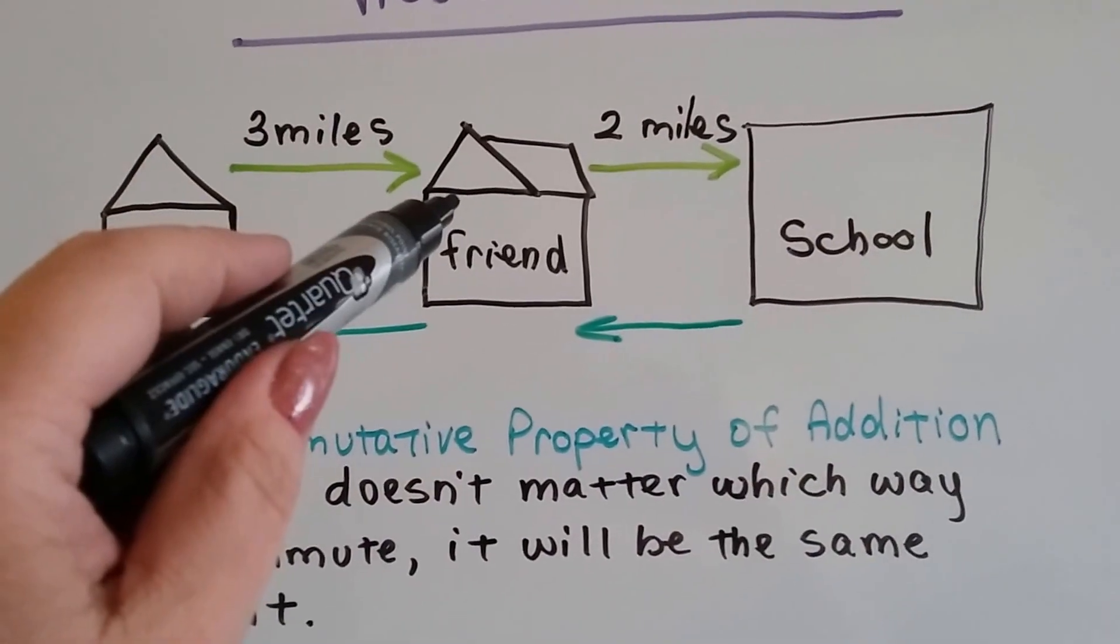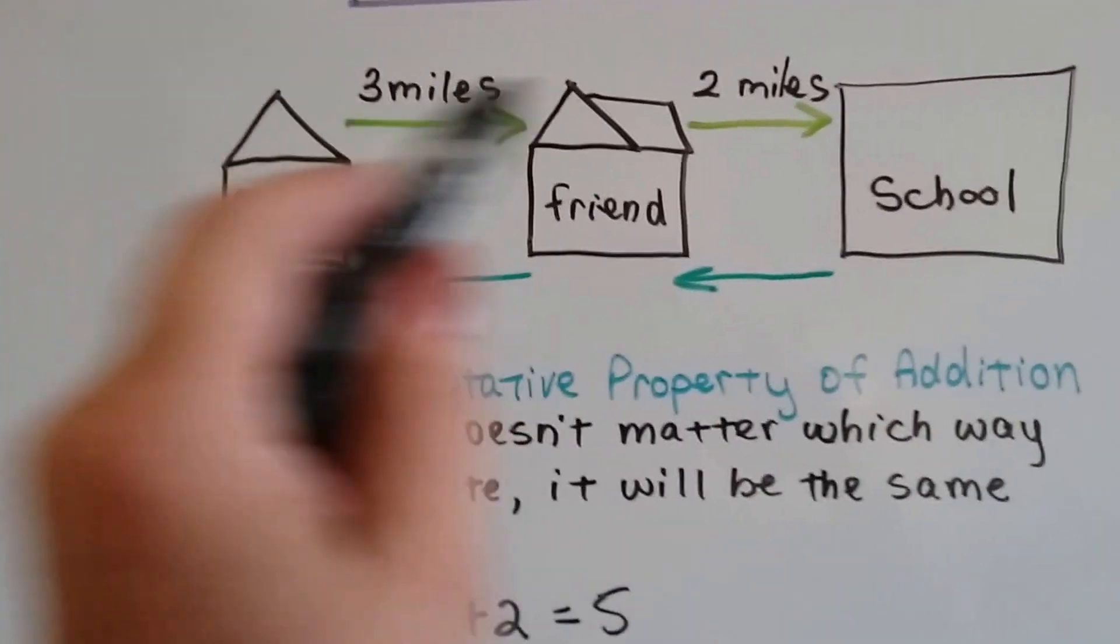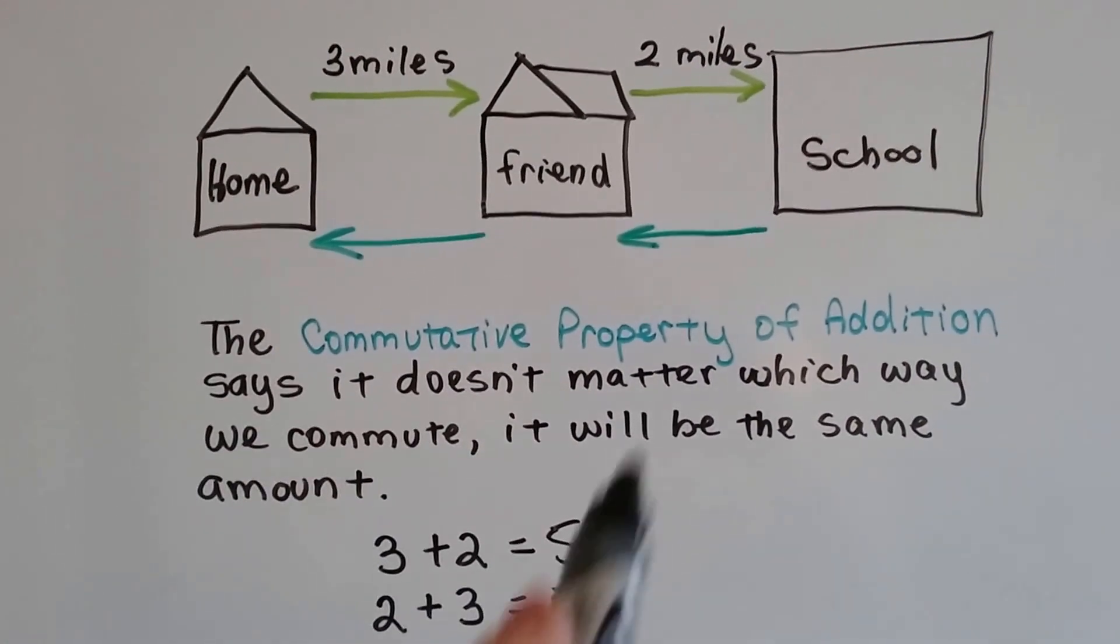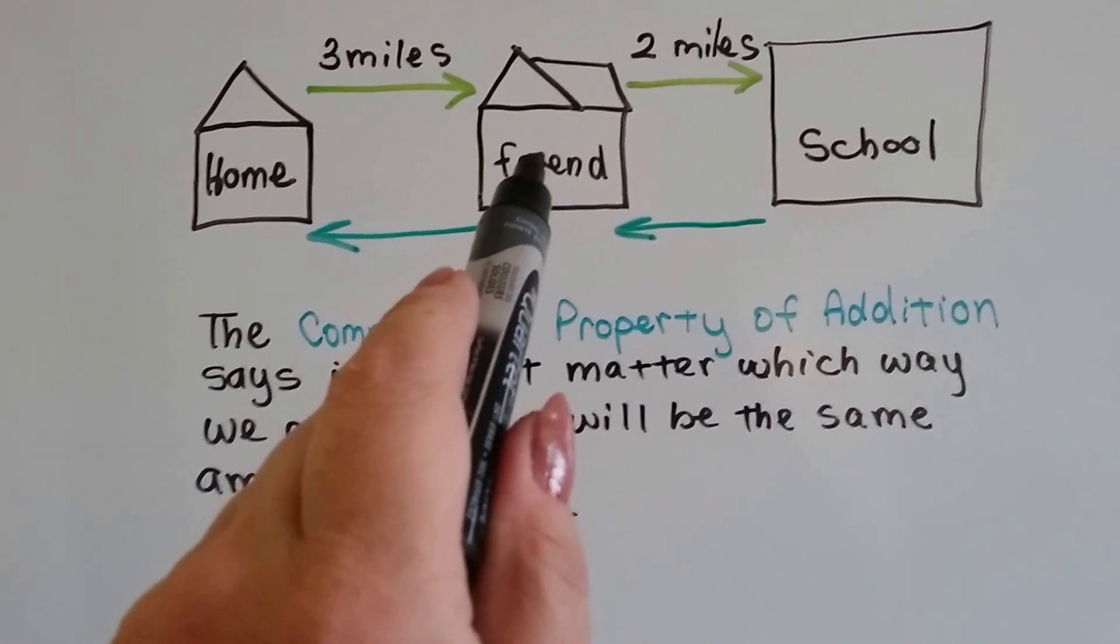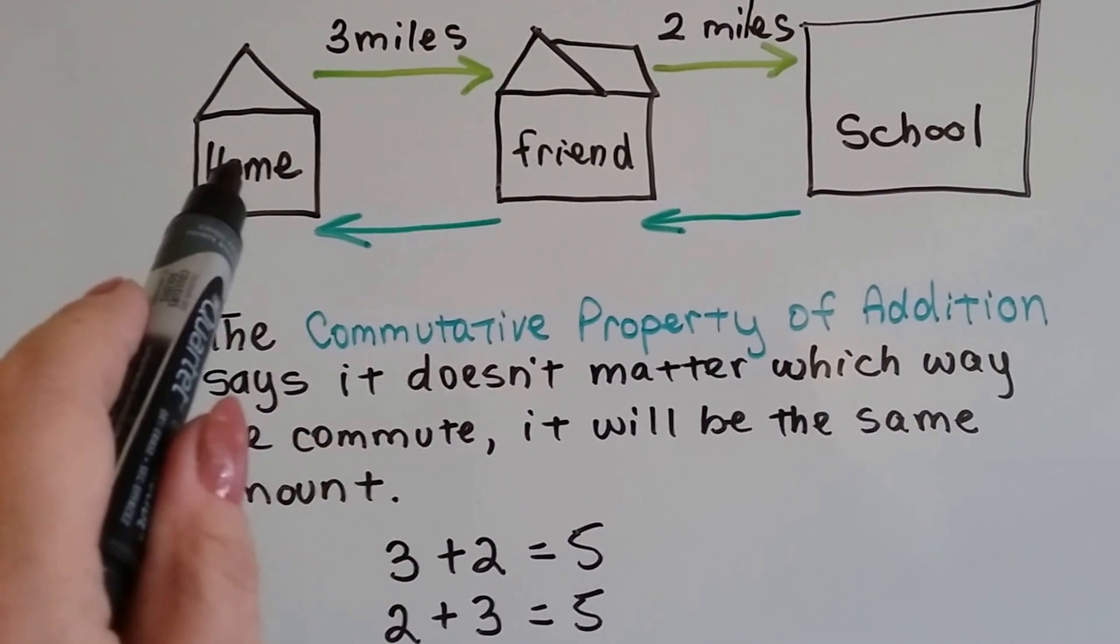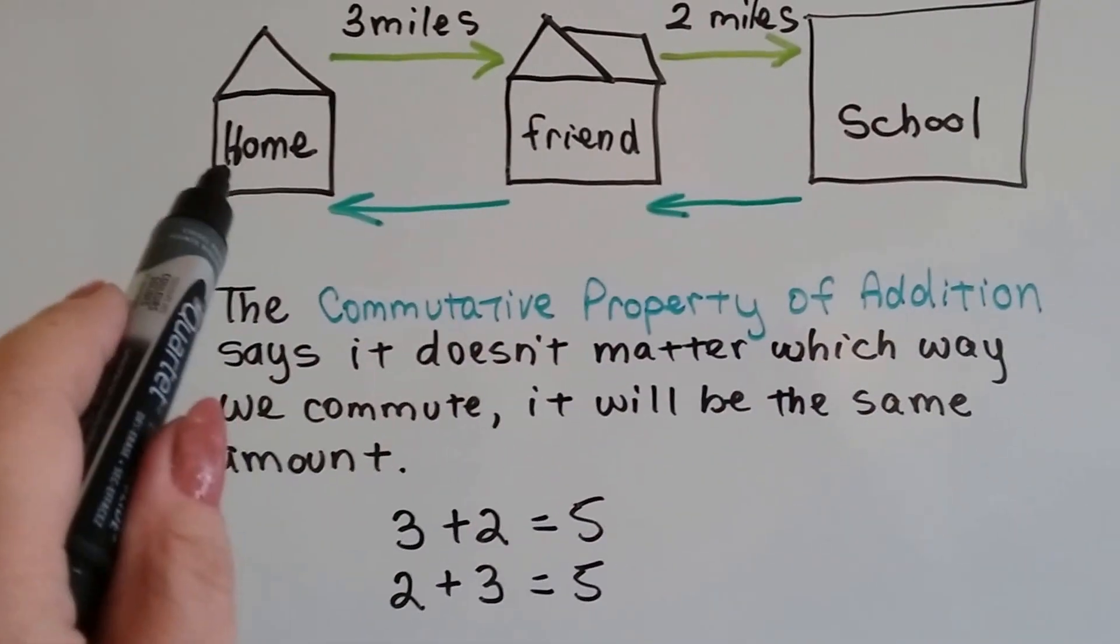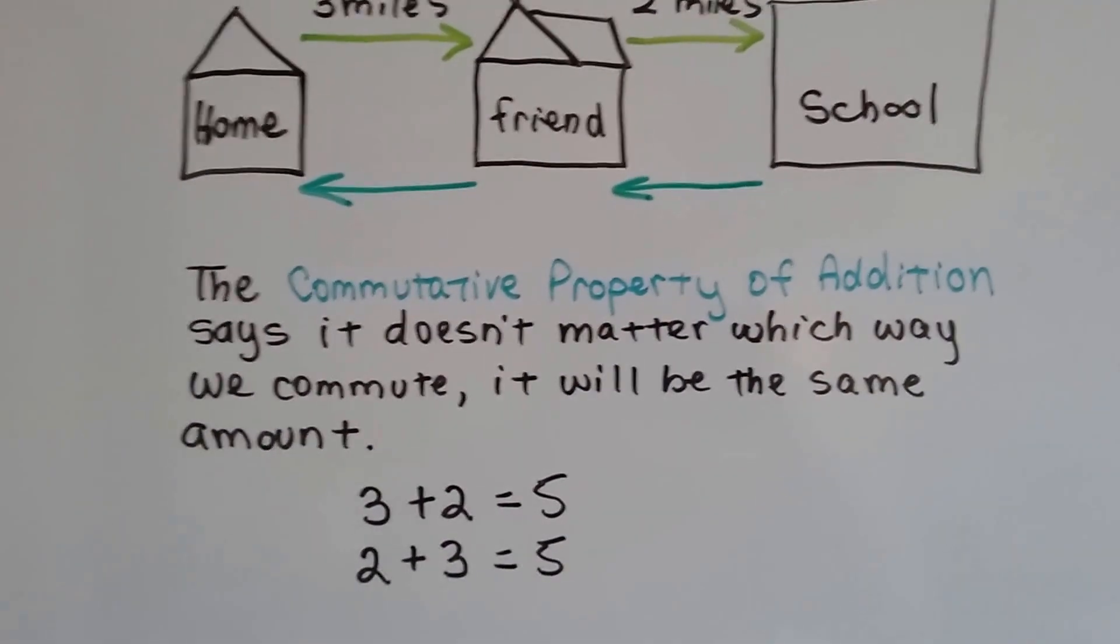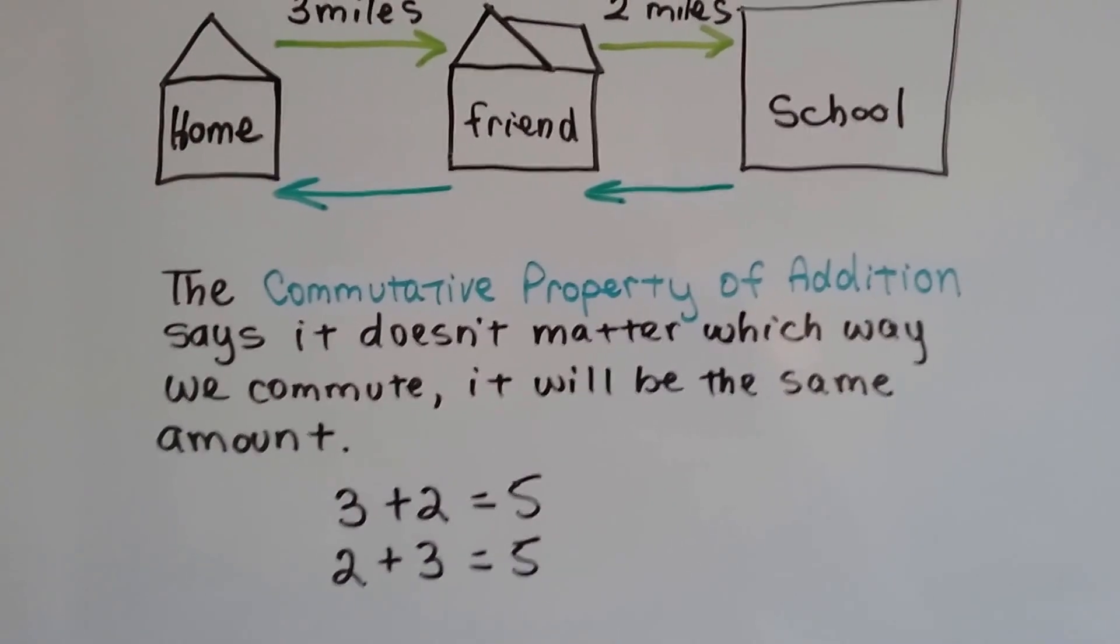So if you commute to a friend's house 3 miles, pick them up, and then commute 2 more miles to school, you've gone 5 miles, haven't you? You've done 3 plus 2 equals 5. But when you're leaving school and you guys go 2 miles to the friend's house, drop them off, and then go 3 miles home, you've still gone 5 miles. It didn't matter if you were going to school or to home. You still went 5 miles. It's the same distance. That's the commutative property. It says it doesn't matter which way we commute. It's going to be the same amount.